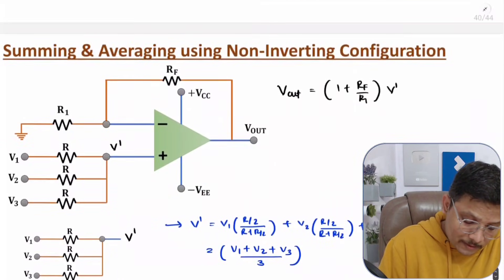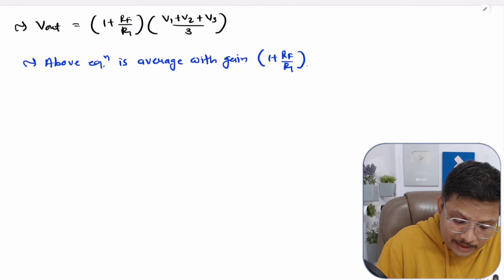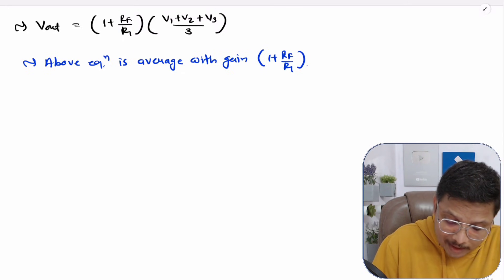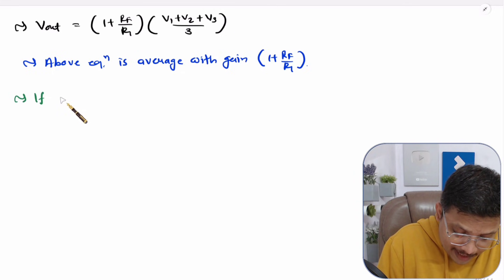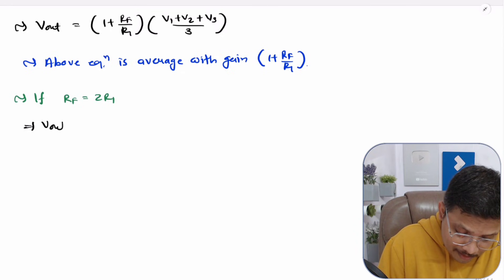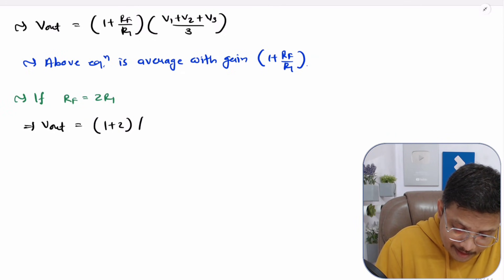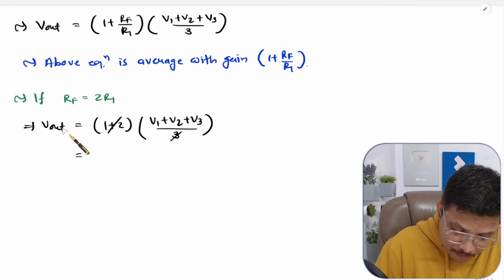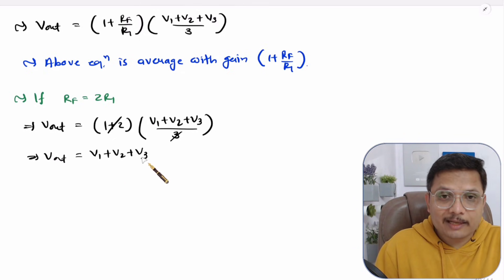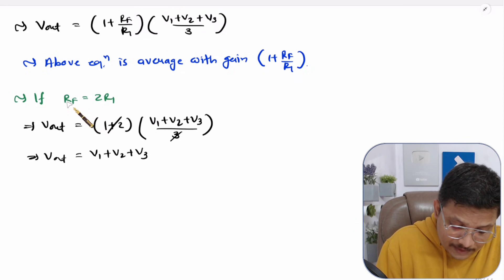For summing using non-inverting configuration, we choose RF = 2R1. Then the gain becomes 1 + 2 = 3, and Vout = 3 × (V1 + V2 + V3)/3 = V1 + V2 + V3. The 3s cancel, giving a pure summation output.